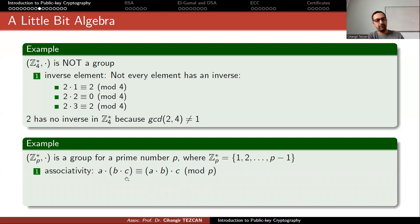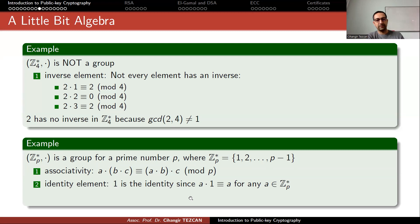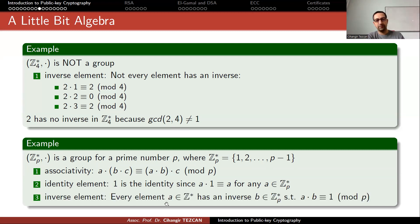So Zₚ* where p is a prime number with respect to multiplication is a group — it is also a field. This is the structure we generally use in cryptography: it satisfies associativity, has identity element 1, and every element has a multiplicative inverse.